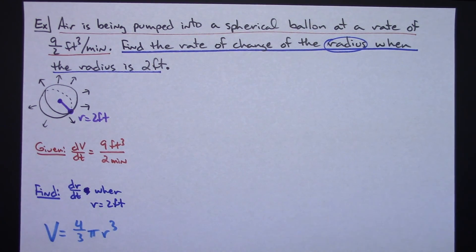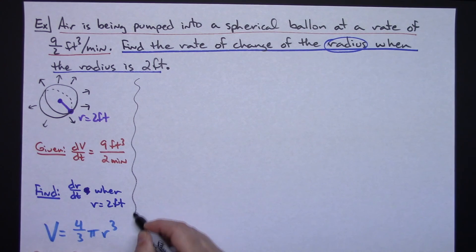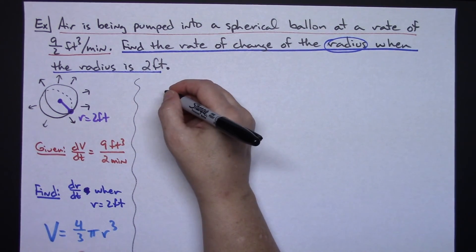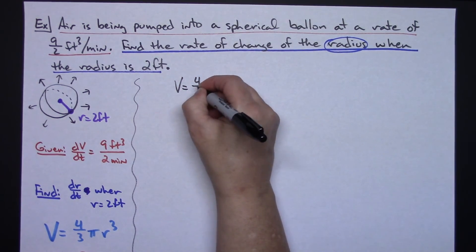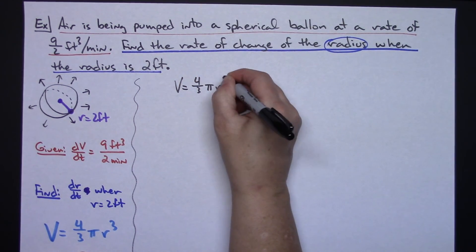So that is kind of something that you would have to know. You've got to have a pretty good basis of your geometric formulas. So I'm going to take this volume formula. V = 4/3 π r³.